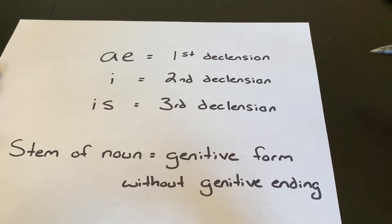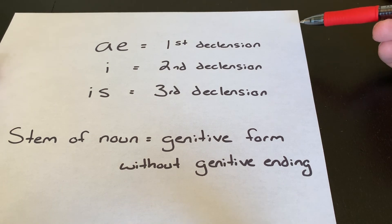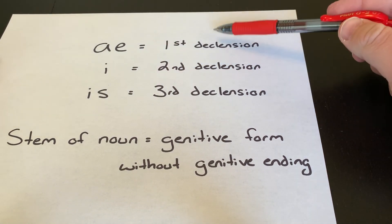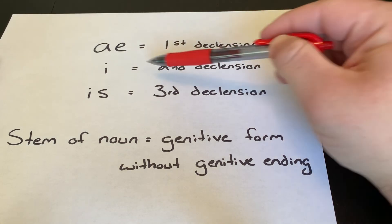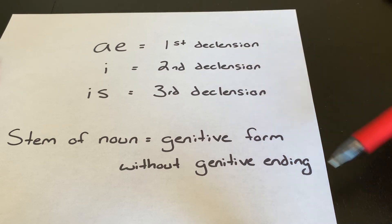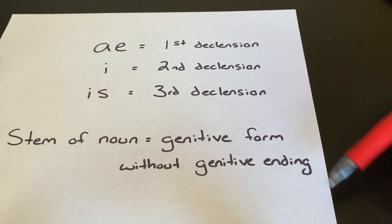So to summarize all of that, when you're identifying the declension of a noun, you look at its genitive ending. If that genitive ending is AE, it's a first declension noun. If it's I, then that's a second declension noun. If it's IS, then that's a third declension noun. You don't look at the nominative, you only look at the genitive. And if you want to make the stem of a noun, you take that genitive form and you remove the genitive ending. And that will be the stem of the noun.